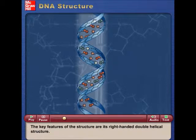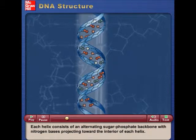The key features of the structure are its right-handed double helical structure. Each helix consists of an alternating sugar phosphate backbone with nitrogen bases projecting toward the interior of each helix.